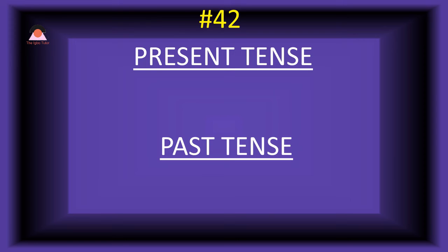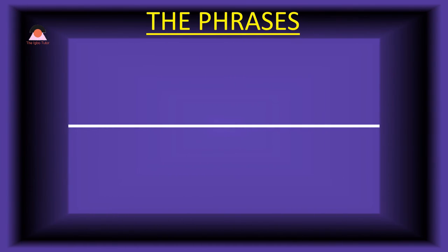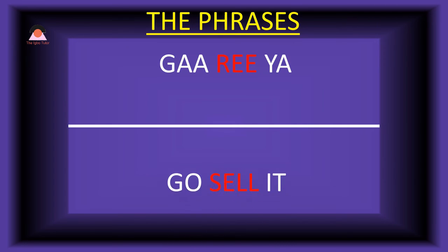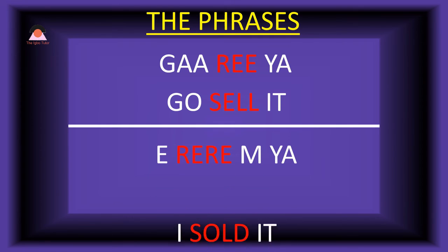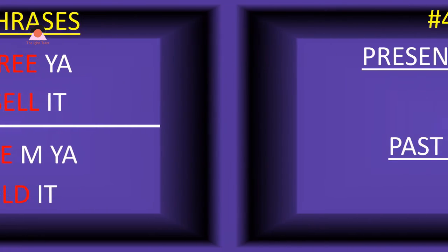Word number forty-two: 're,' meaning 'sell.' The past tense of re is 'rere,' meaning 'sold.' Present tense phrase: 'ga ree ya' — go sell it. Past tense: 'e-rere me ya' — I sold it.